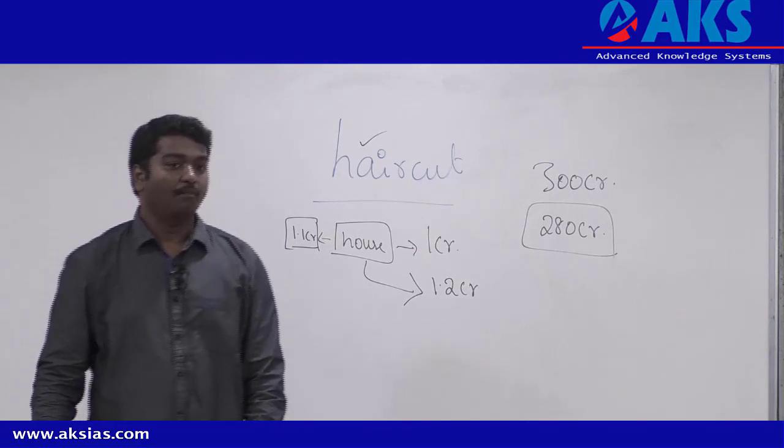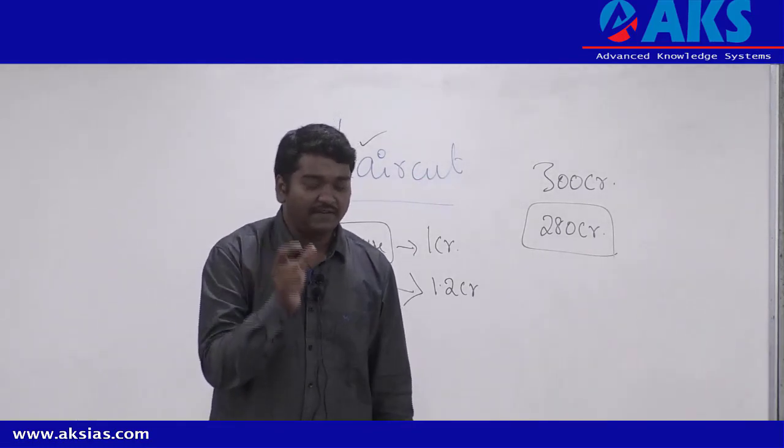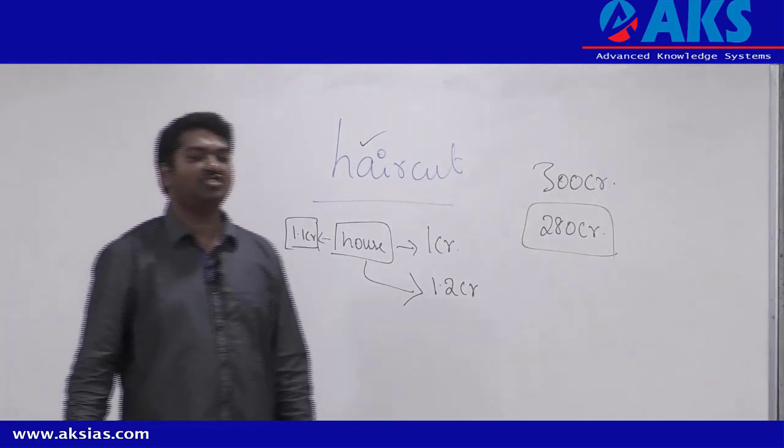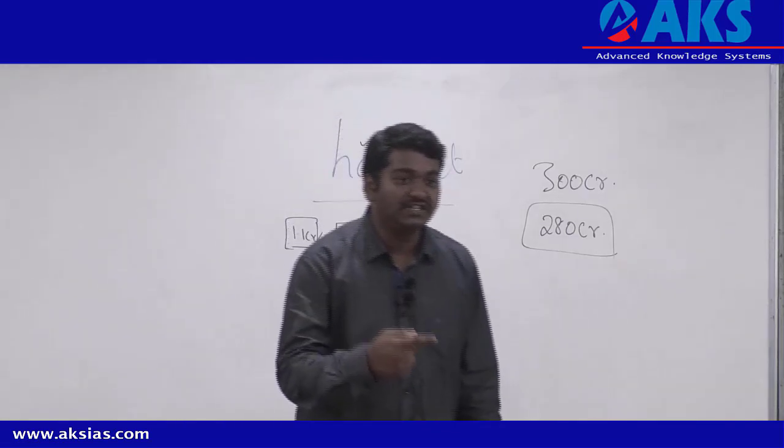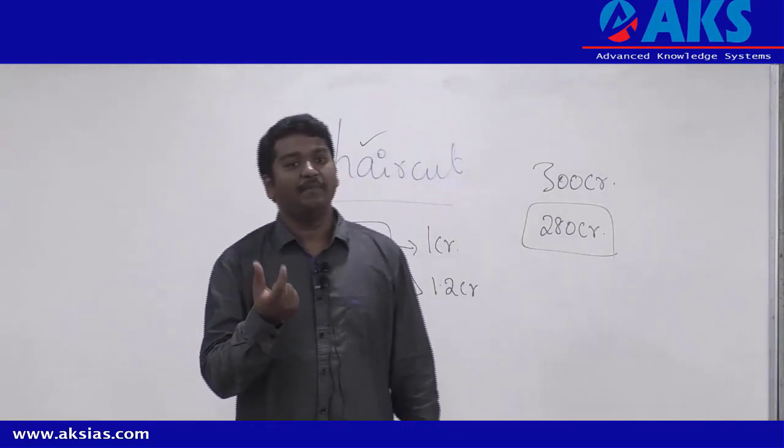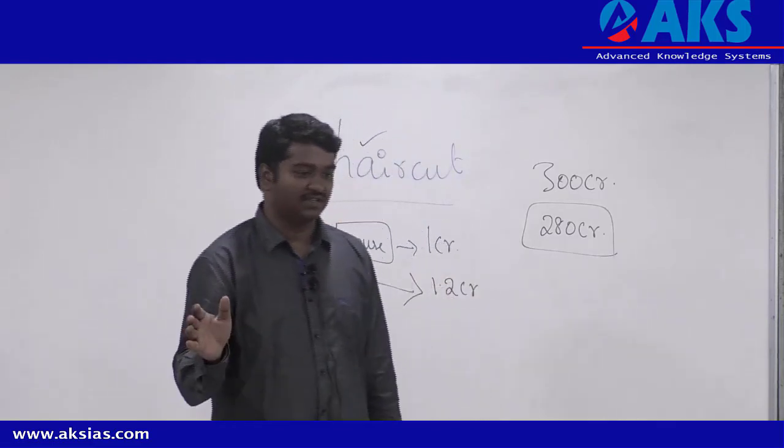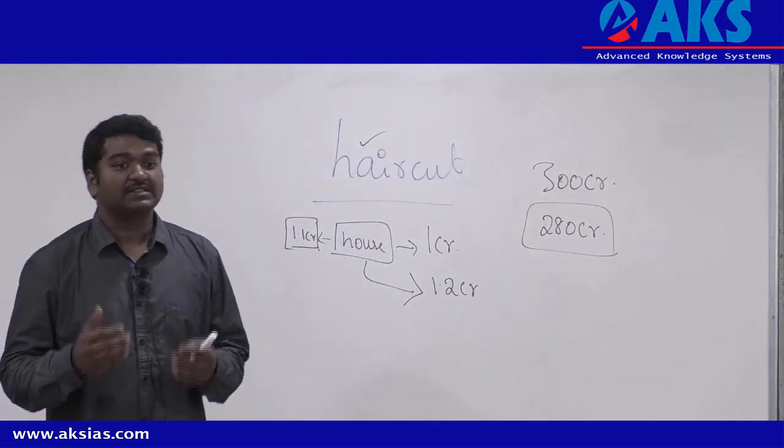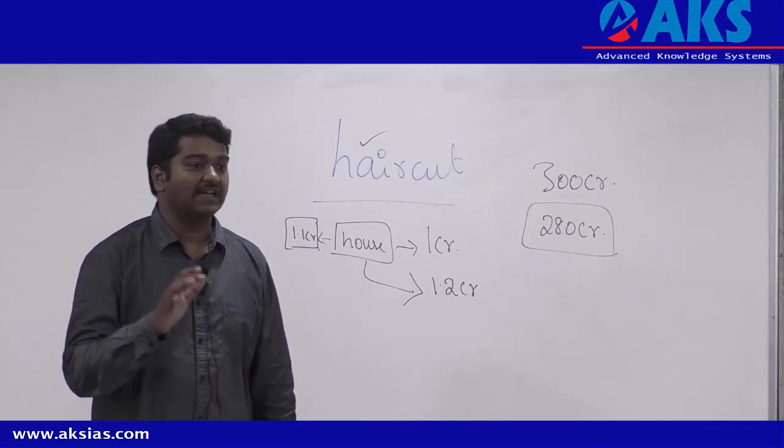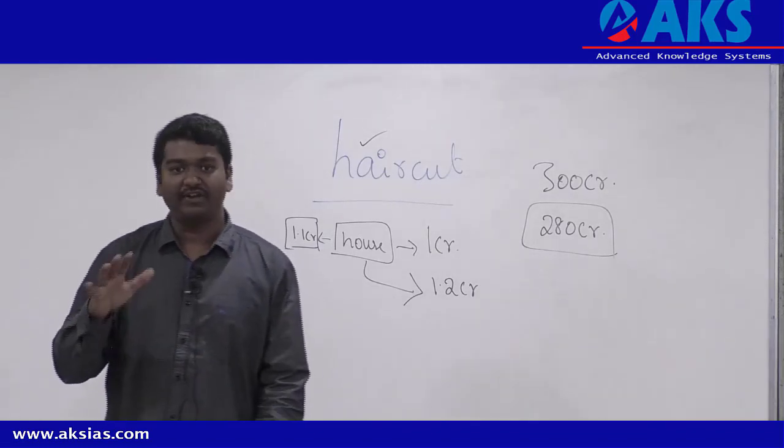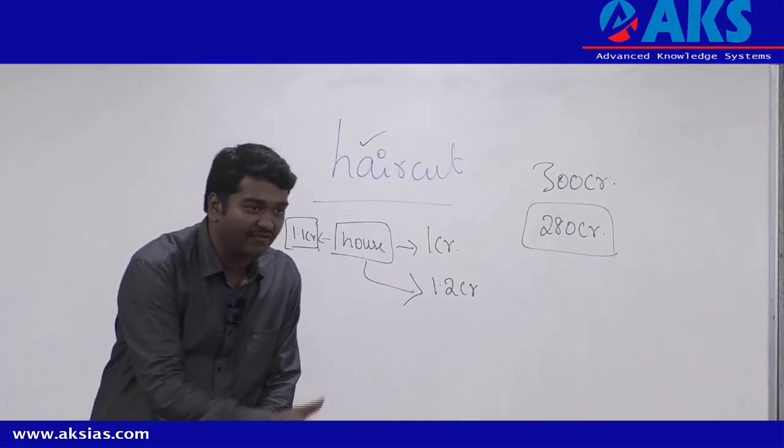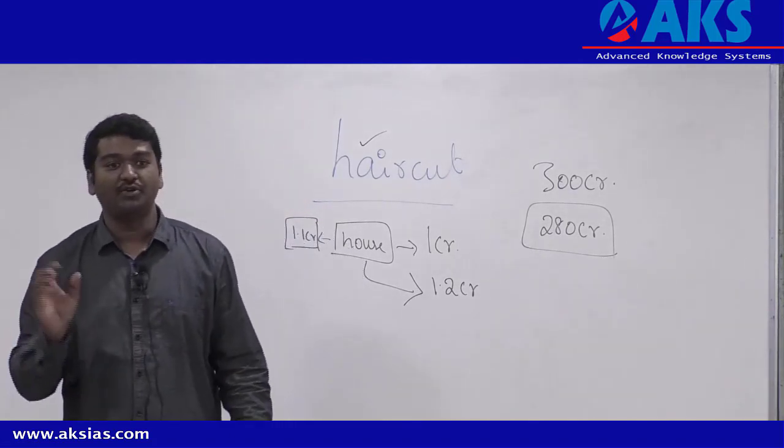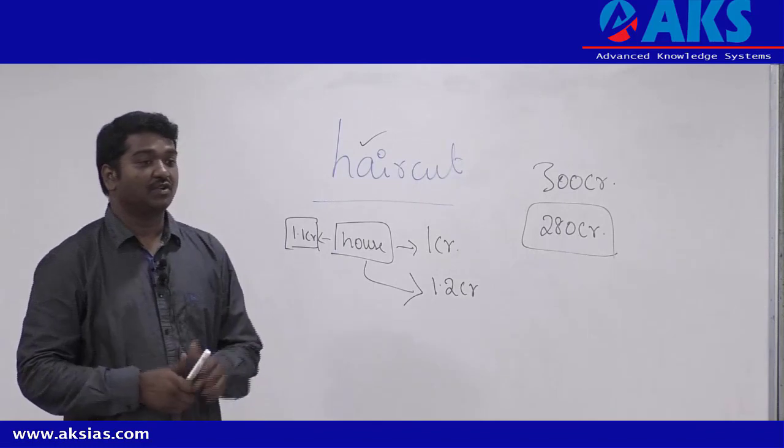1971, Indira Gandhi brought nationalization. After that, she also brought emergency. Once emergency came, politicians started dictating to bureaucrats what needs to be done. After emergency, a committee was set up to see what happened during emergency. They found that bureaucrats did not just surrender to politicians. Politicians asked them to bend in front of us. But they started crawling in front of politicians. That means, they literally started sleeping and they did not do anything against politicians.